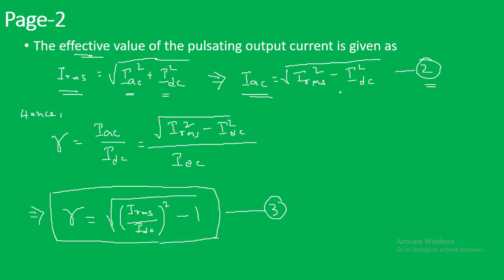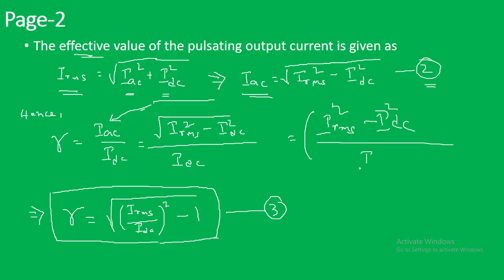Now substituting IAC from equation 2 into equation 1, the expression for the ripple factor becomes: γ = √(I²_RMS − I²_DC) / I_DC. Taking I_DC inside the square root, we can write this as: γ = √[(I_RMS/I_DC)² − 1]. This is equation 3, the general expression to find the ripple factor for both half wave and full wave rectifiers.